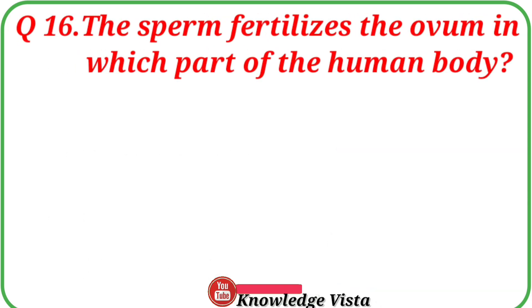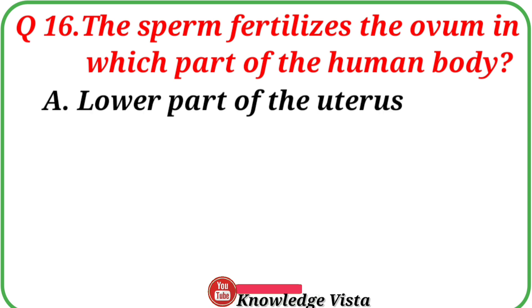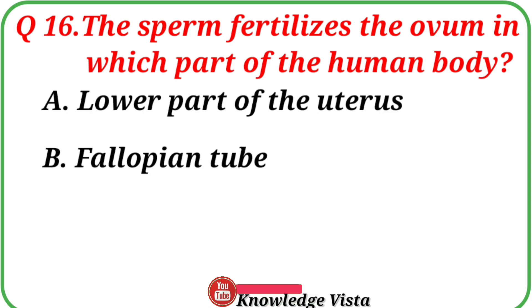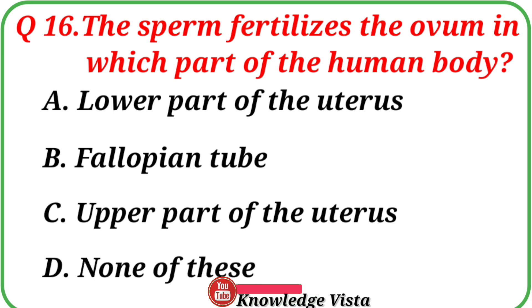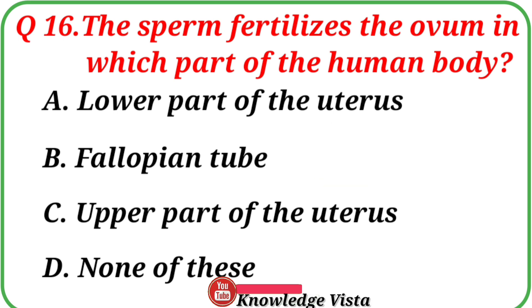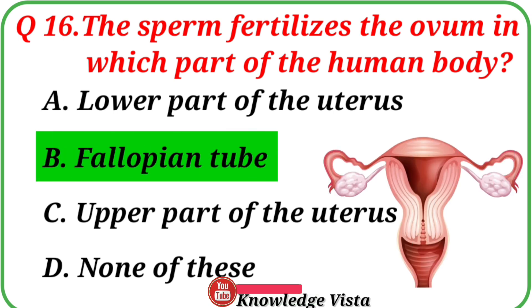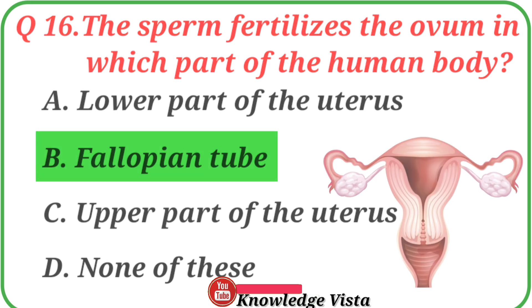Question number 16: The sperm fertilizes the ovum in which part of the human body? Your options are: A. Lower part of the uterus, B. Fallopian tube, C. Upper part of the uterus, D. None of these. Correct answer is option B, Fallopian tube. The sperm fertilizes the ovum in the fallopian tube.